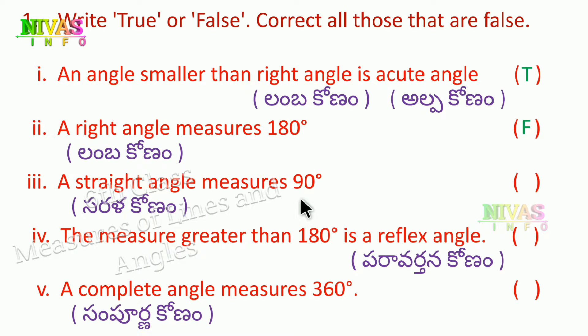Third problem: a straight angle measures 90 degrees. A straight angle measures 180 degrees, so this is also false. Correct answer: a straight angle measures 180 degrees.